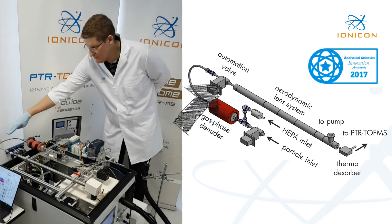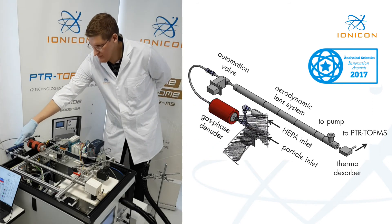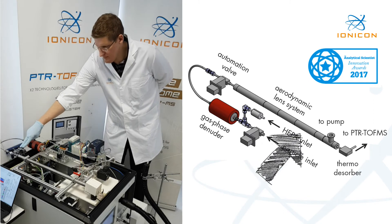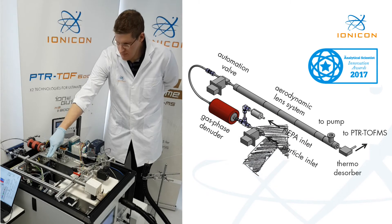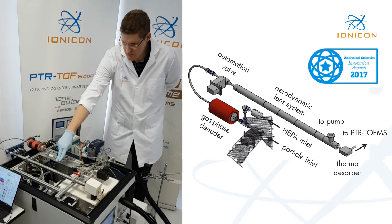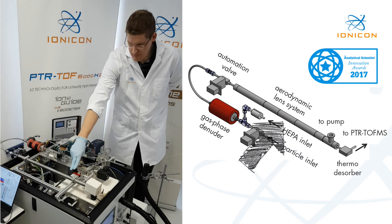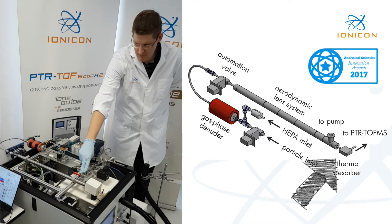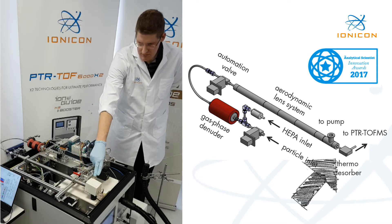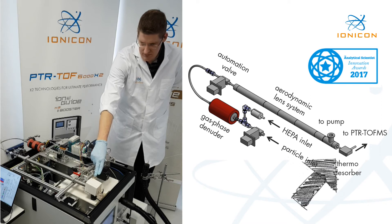After a soft U-turn, the sample passes through a critical orifice and is accelerated into our high-pressure aerodynamic lens system. At pressures in the range of a few millibars, particles are collimated in the center of the aerodynamic lens system and are subsampled by a virtual impactor. Finally, the thermodissolver evaporates the particulate organics at moderate temperatures around 140 degrees Celsius and reduced pressures, and guides the newly formed volatiles into our PTR-TOF-MS for analysis.